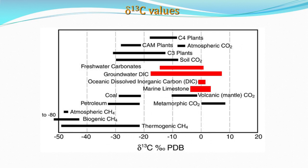Each and every biological or geological material has contrasting isotopic signals. Here I am giving you an example of delta 13C values. In this diagram the red bars represent inorganic material like freshwater carbonate, groundwater carbonate, and marine limestone, all characterized by very high delta 13C values. On the other hand, biological materials in the left corner of the diagram show more negative delta 13C values. Such contrasting features enable us to infer paleoclimatic conditions using marine and continental archives.